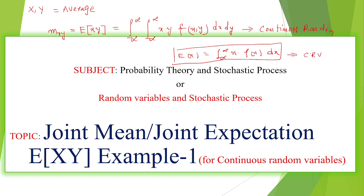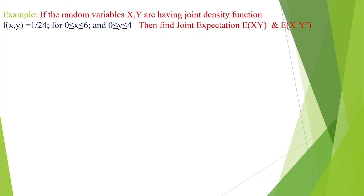I will explain with one example. The joint density function of two companies is f(x,y) equal to 1/24, with limits x from 0 to 6 and y from 0 to 4. Find E(xy) and E(x²y²).